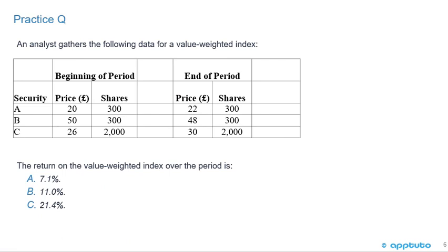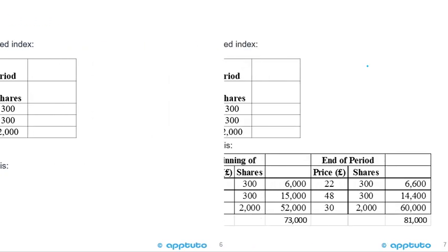Another quick question: an analyst gathers data for a value weighted index with three securities A, B, and C. Security A: beginning price 20 pounds, 300 shares, ending price 22 pounds. Security B: beginning price 50 pounds, 300 shares, ending price 48 pounds. Security C: beginning price 26 pounds, 2,000 shares, ending price 30 pounds. The return on the value weighted index over one period is A, 7.1%, B, 11%, or C, 21.4%.